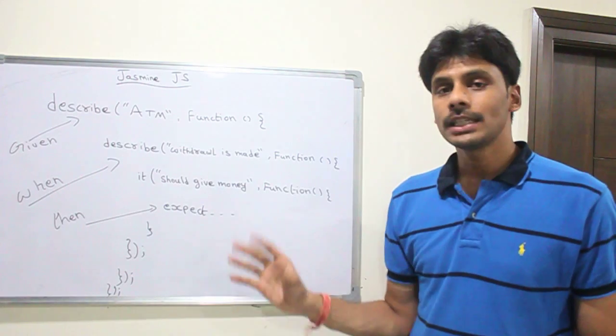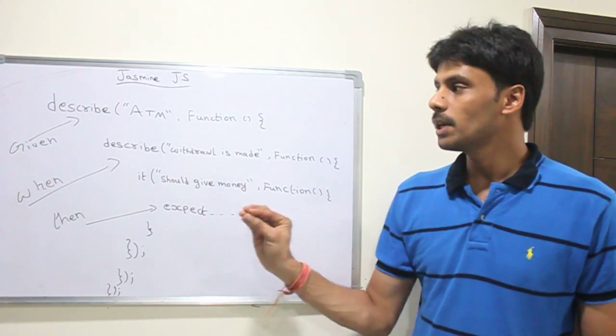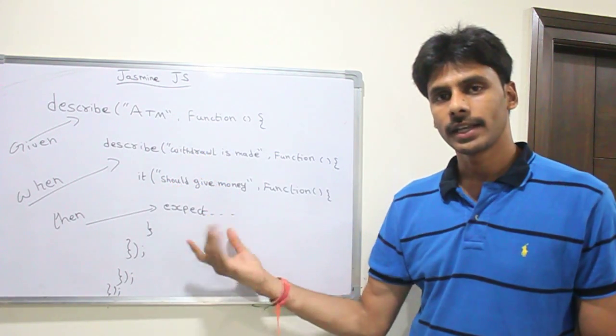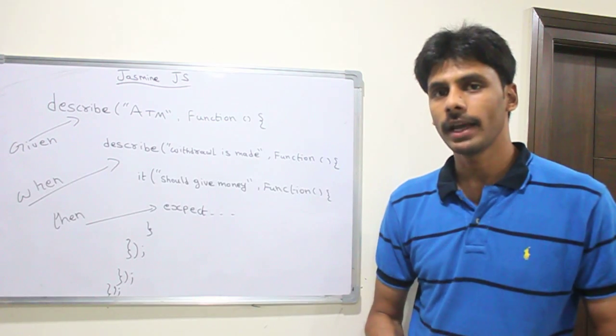So it's that easy to do BDD simply using the describe, it, and the various expects that is given by Jasmine.